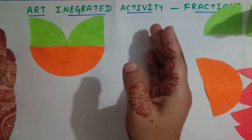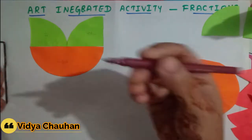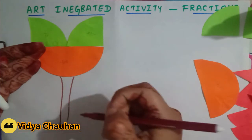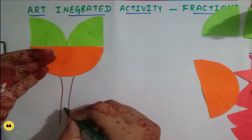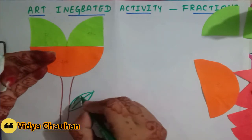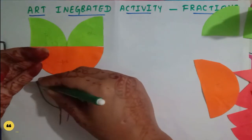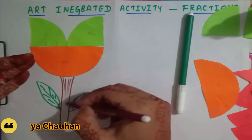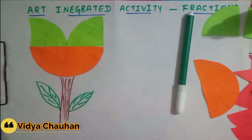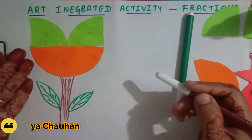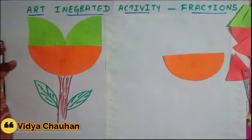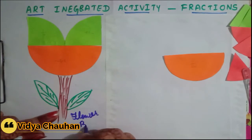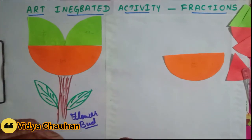The flower bud is done but looks a little incomplete, so let's give it a finishing touch — a stem with a beautiful leaf on one side. Children, we have drawn a beautiful flower bud using fractions! In this flower bud we used a half and one fourth.